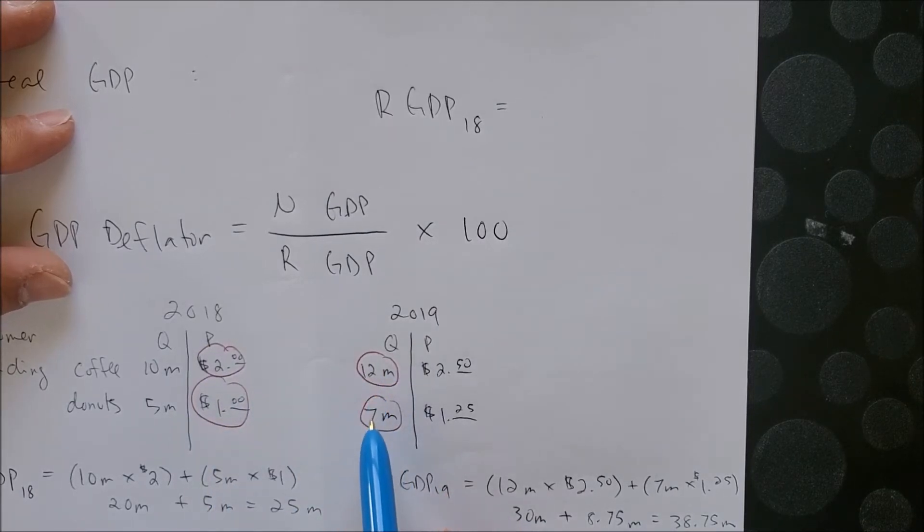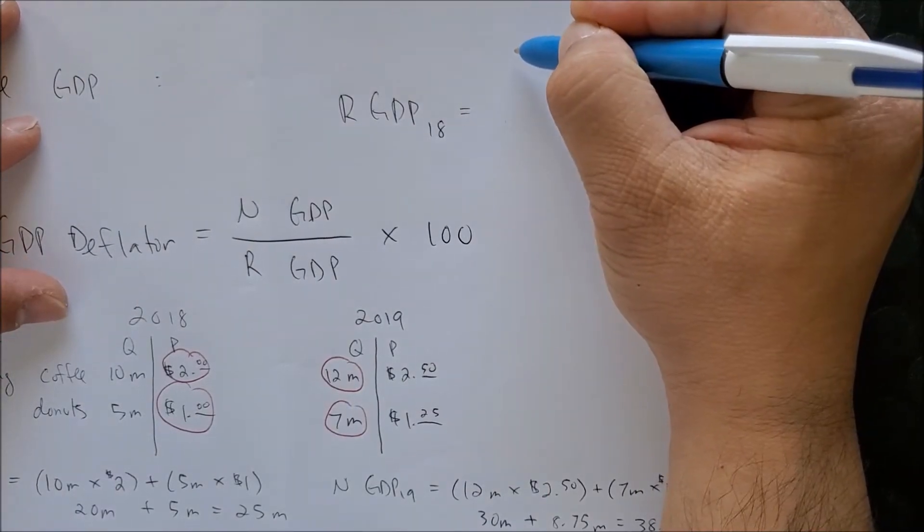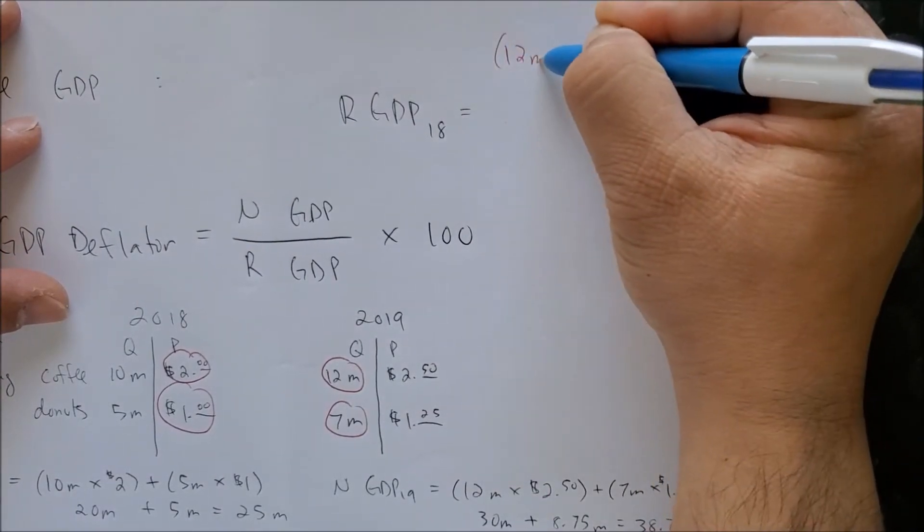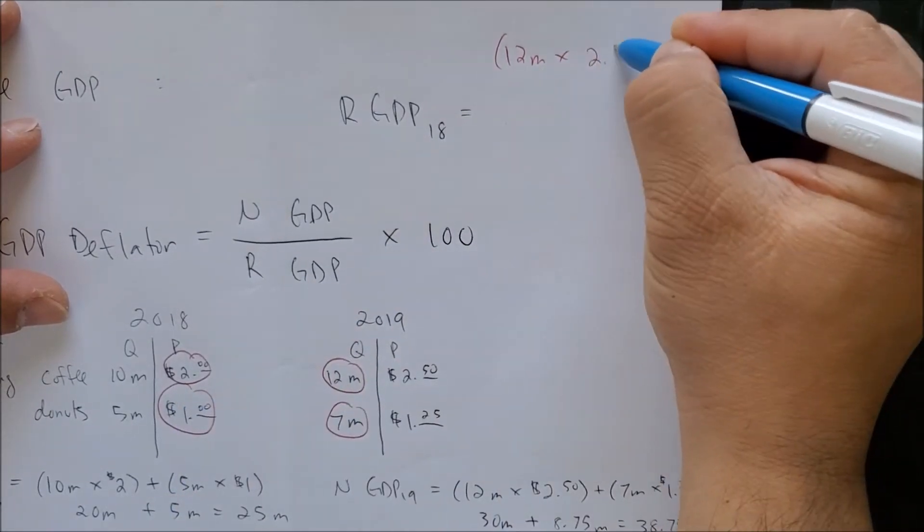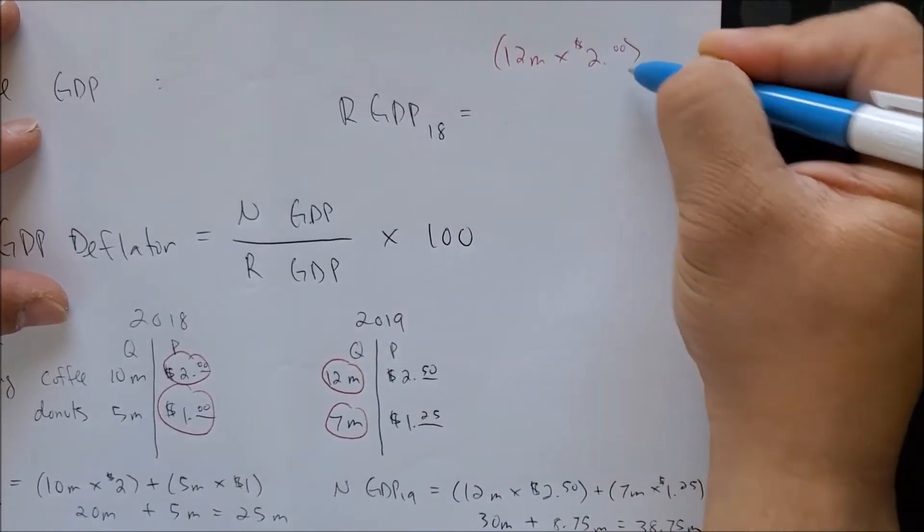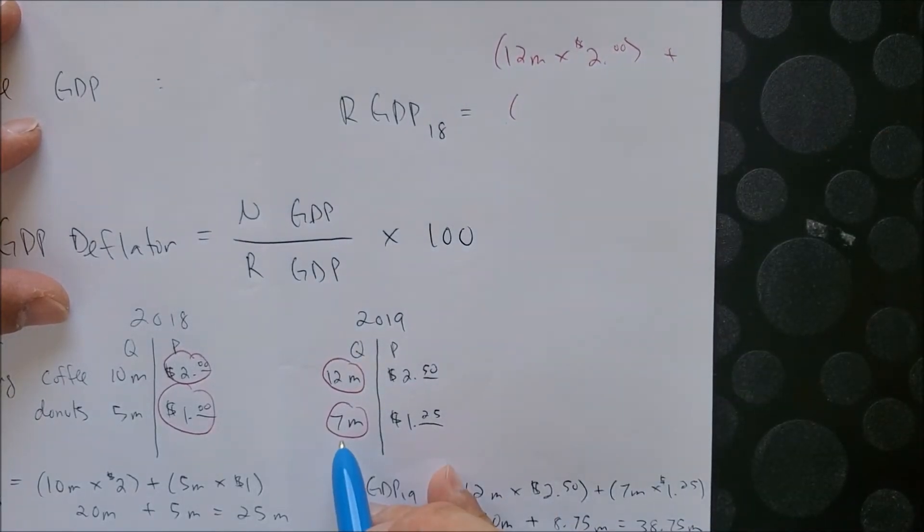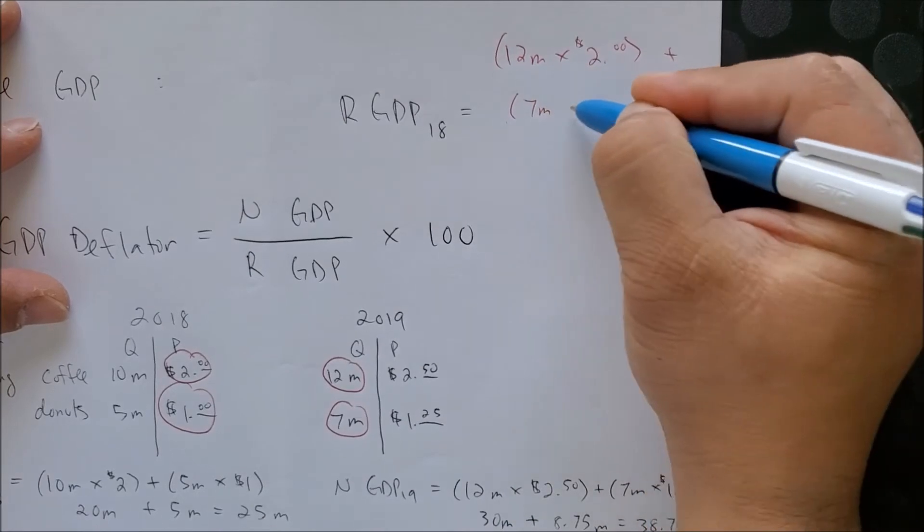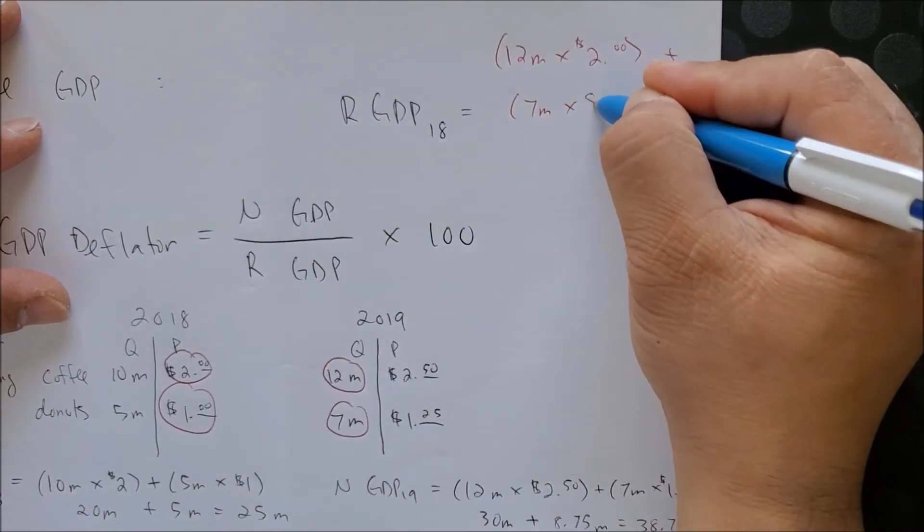So now again we're going to put here for quantity of coffee 12 million times the price of 2018 of two dollars, plus the number of doughnuts in 2019, seven million, times the price of doughnuts in 2018 at one dollar.